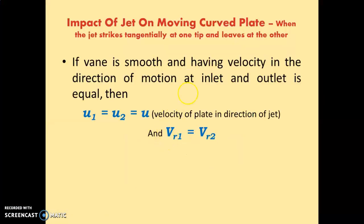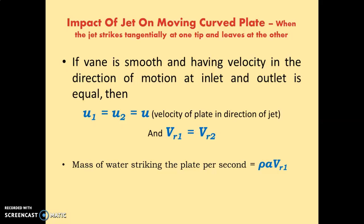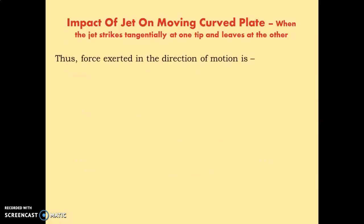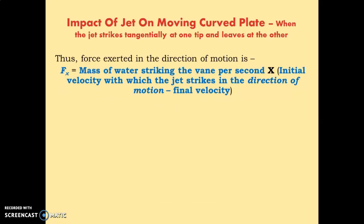The mass of water striking the plate per second is rho·A·Vr1, where Vr1 is the relative velocity with which the jet strikes the plate and A is the area of the jet. Next, we will find out the force exerted in the direction of motion, which is the x-direction, so this force is Fx.